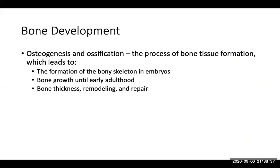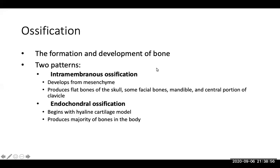How do bones develop? Osteogenesis refers to bone beginning, and ossification is bone forming — the process of bone tissue formation. This leads to the formation of the bony skeleton in embryos, bone growth until early adulthood, and then bone thickening, remodeling, and repair throughout life. There are two patterns of ossification: intramembranous and endochondral.